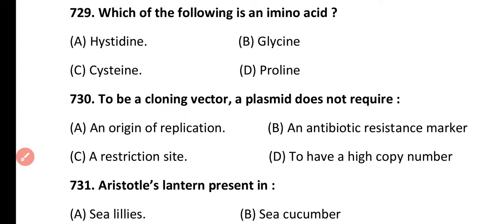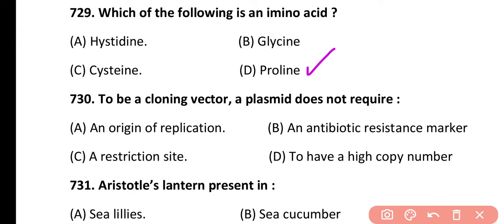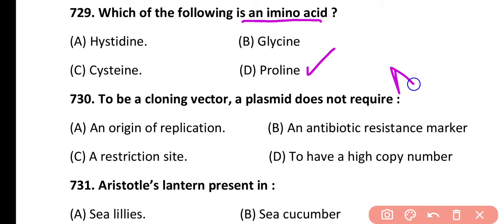Question 729. Which one of the following is an amino acid? Histidine, glycine, cysteine, or proline. Correct answer is option D. Proline is an amino acid because it has an amino group (NH).